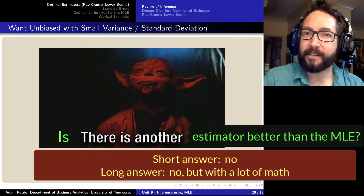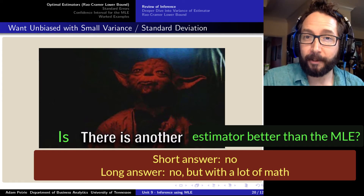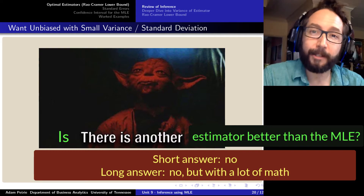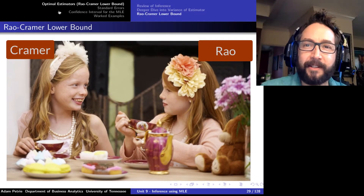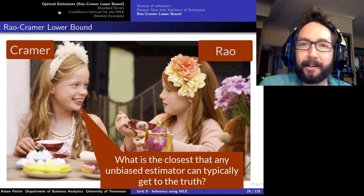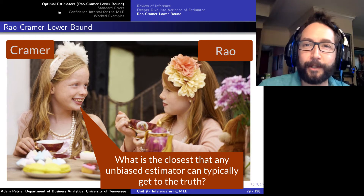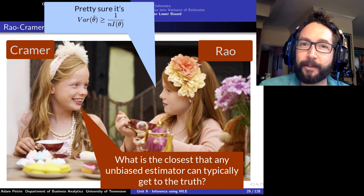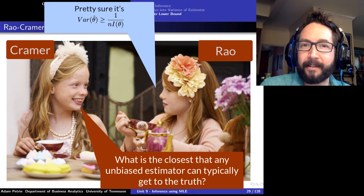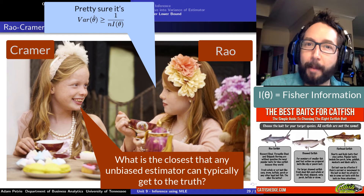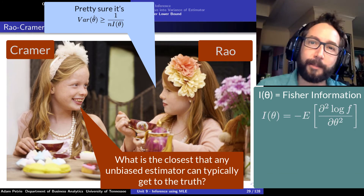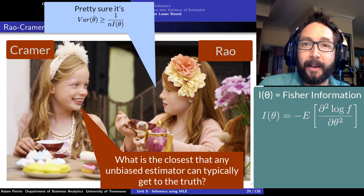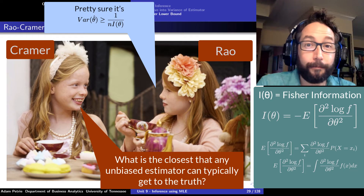It turns out the answer is no, and this is tied to what's known as the Rao-Cramér lower bound, which provides the smallest possible variance of any unbiased estimator. Rao and Cramér figured out that the variance of any unbiased estimator theta-hat has to be at least one over N times a quantity known as the Fisher information of the probability distribution. Remarkably, there is an expression that tells us the smallest possible variance of any unbiased estimator, and we can check whether we've found it or whether there's still room for improvement.